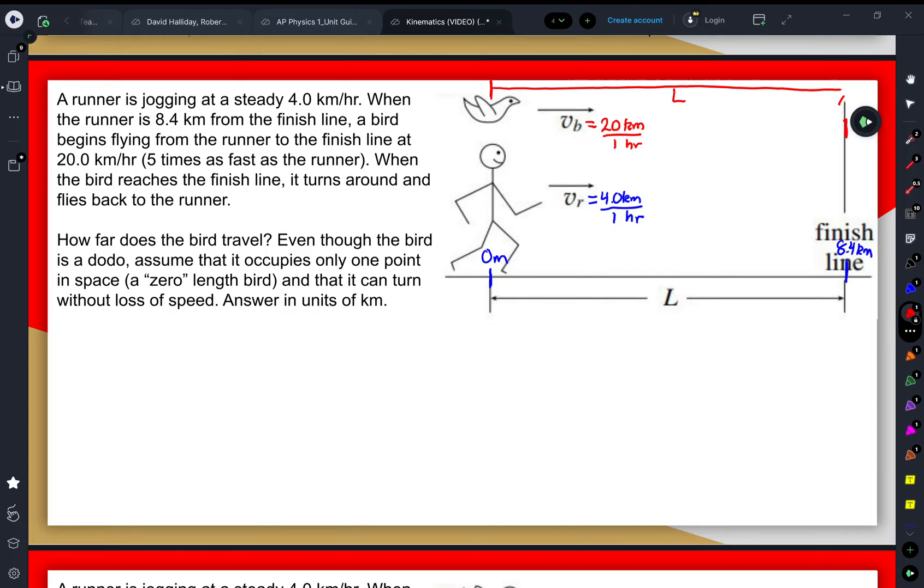Once it gets here, it travels back some amount of distance this way. It keeps doing that until it runs into that runner whenever they are at the exact same position at the exact same time.